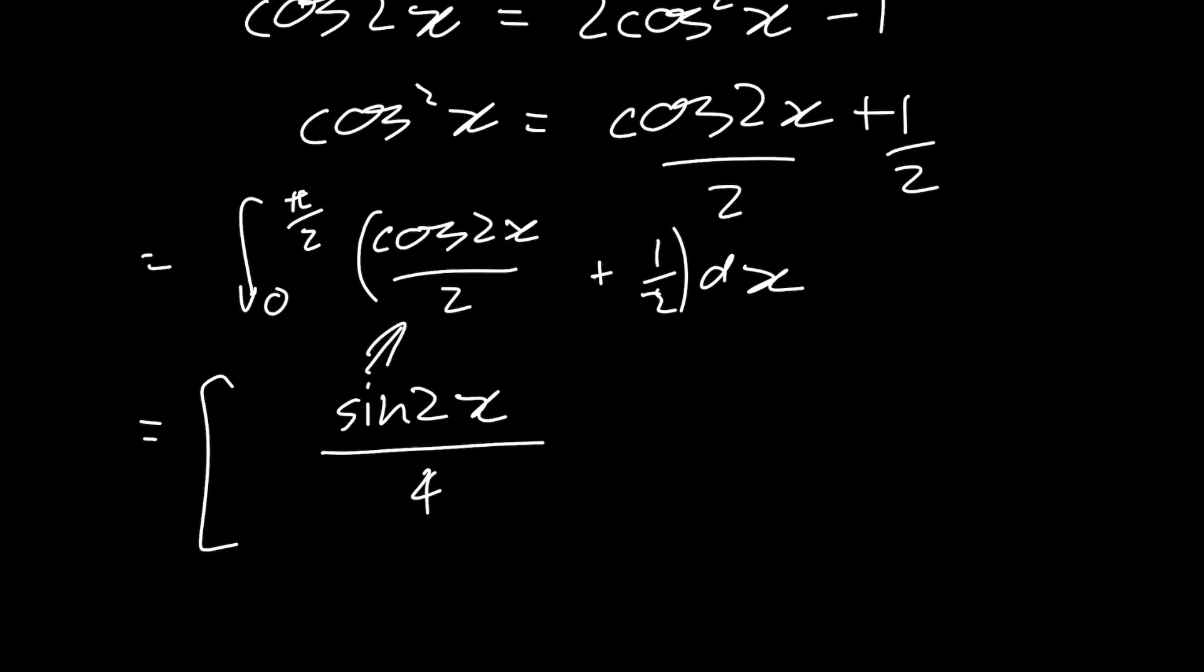And we can check that that was correct by differentiating sine of 2x over 4. The derivative of sine of 2x is going to be cosine of 2x times by 2. So cosine of 2x times by 2 divided by 4 is cosine of 2x over 2. So that integral, that integration did work. Now the integral of 1 over 2 is going to be 1 over 2x.